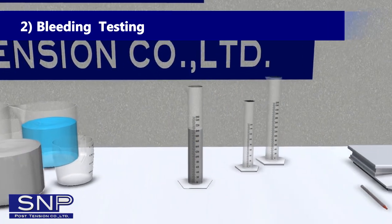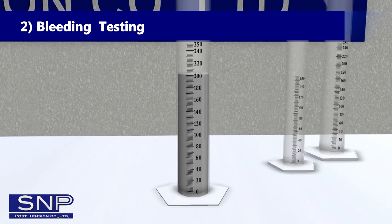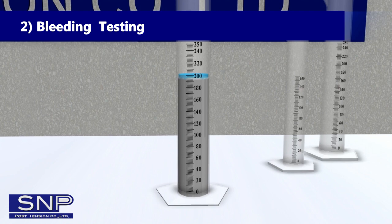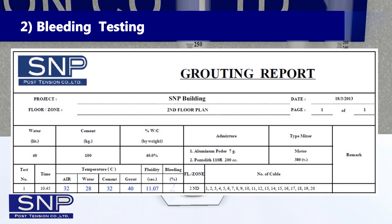Bleeding Testing: Prepare a 250mm standard tube and pour mixed cement in it to 200mm. After that, leave it for 30 minutes and observe its bleeding. Record values in the Grouting Report Table. Bleeding of cement should not exceed 3% of the tested cement volume.